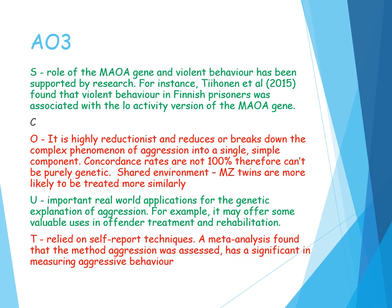There are also issues surrounding testability, as the research relies heavily on self-report techniques and meta-analysis. A meta-analysis found that method of measuring aggression was flawed and showed large variations in aggressive behaviour. When observational studies were used instead, results indicated less of a genetic influence and more of an environmental one. This draws into question the validity of the findings, and genetics may not have as significant an impact on aggressive behaviour as research first implies.